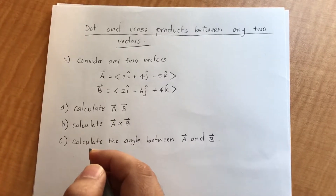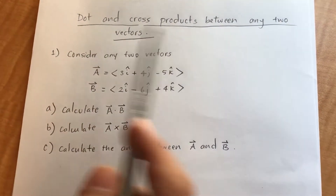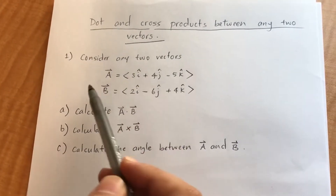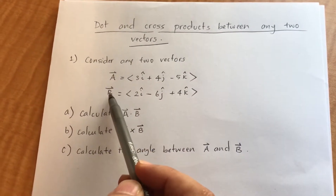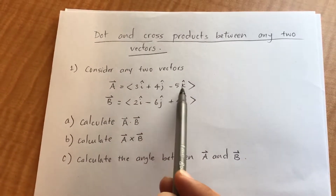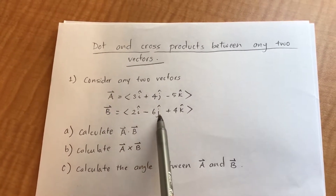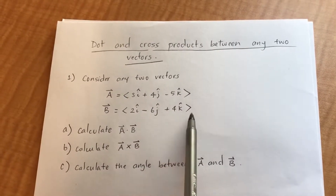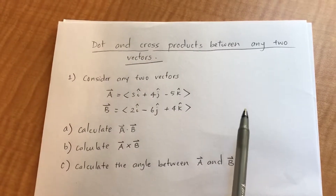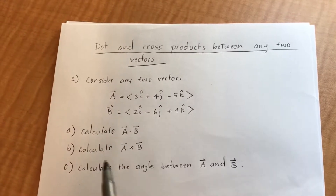Today I'm going to give you an insight about a simple physics problem related to dot and cross products between any two vectors. For example, I have two vectors a and b: vector a reads as 3i-hat plus 4j-hat minus 5k-hat, whereas vector b reads as 2i-hat minus 6j-hat plus 4k-hat. Here i, j, k are the unit vectors along the x-axis, y-axis, and z-axis respectively.